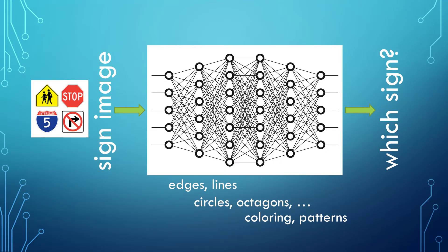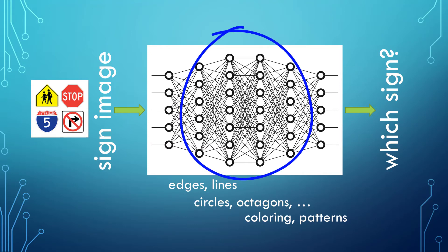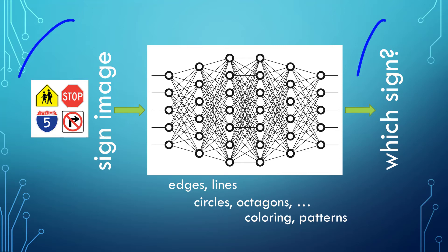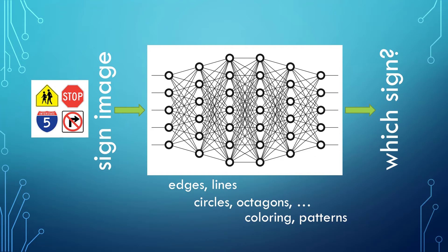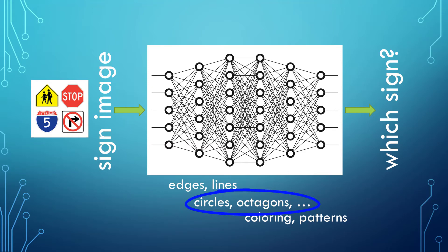You may have heard the term deep learning. This refers to a neural network approach where there are many hidden layers to the neural net. During the learning process, the layers may self-organize into some layered structure. For example, suppose we are training a deep neural network to recognize street signs, which of course is something that self-driving cars would need to do. Different layers in the network may learn to solve different parts of the problem — some layers may recognize low-level geometry like edges and lines, other layers may recognize shapes like circles and octagons, and still other layers may recognize colors, words, and the complete sign. The developer doesn't control how these layers get organized; the organization emerges from the automated learning process.